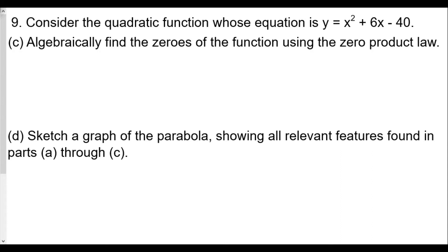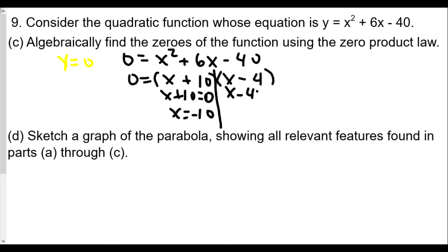We continue for part (c): algebraically find the zeros of the function using the zero product law. We have 0 equals x² + 6x - 40. The two numbers that multiply to 40 and subtract to 6 are 10 and 4: 10 times 4 is 40 and 10 minus 4 is 6. So we have (x + 10)(x - 4) = 0. x plus 10 equals 0 gives us x equals negative 10, and x minus 4 equals 0 gives x equals positive 4. These are the zeros of our quadratic function.